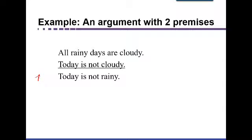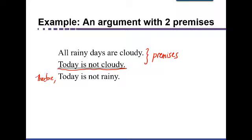I put in the word 'therefore' to indicate that this is a conclusion, but you can also use a line here to show that anything above the line represents premises and anything below the line is the conclusion. In order to analyze this argument and determine if it's valid — whether these two premises support the conclusion that today is not rainy — we need to learn how to draw Euler diagrams.